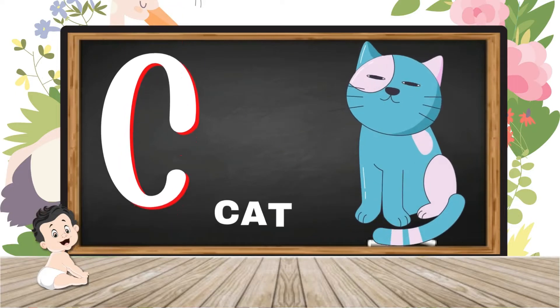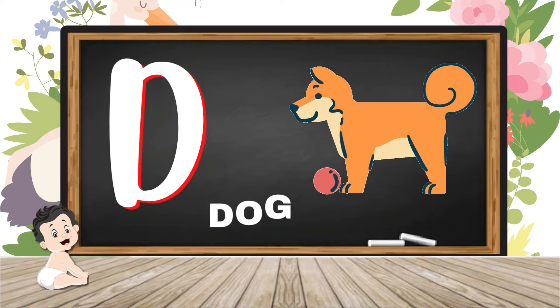C for cat, cat means willy. D for dog, dog means kutta.